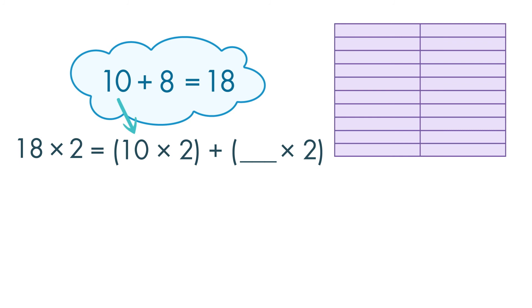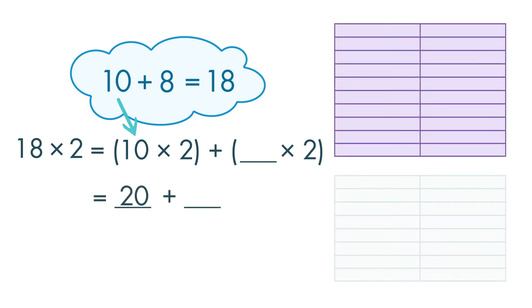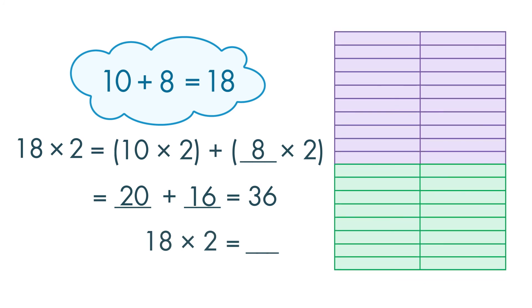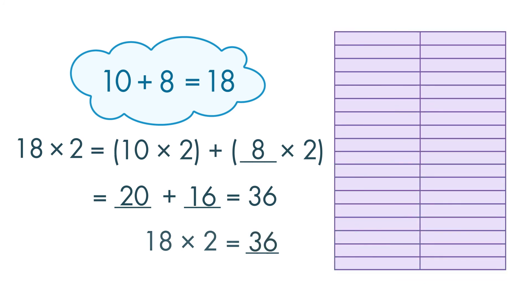10 times 2 is equal to 20. 8 times 2 is equal to 16. 20 plus 16 is equal to 36. So, 18 times 2 is equal to 36.